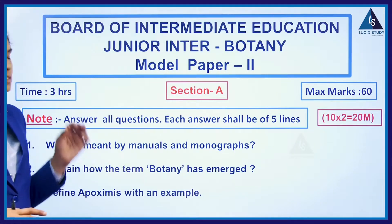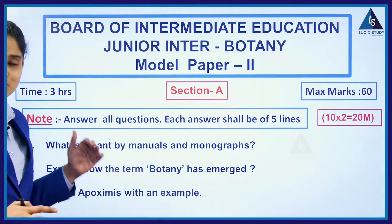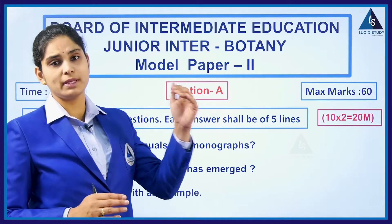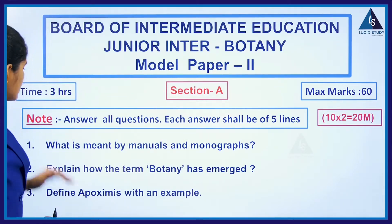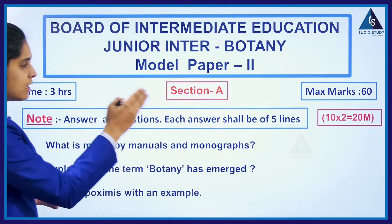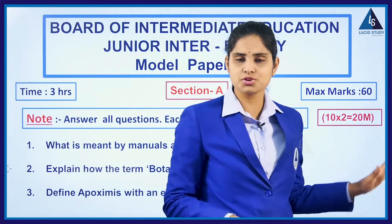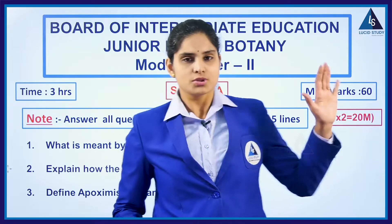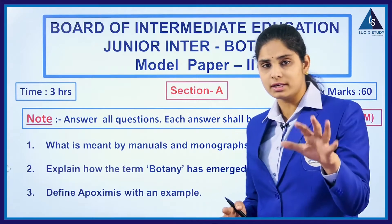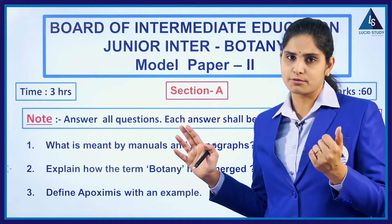The duration of the whole exam is three hours and the total maximum marks are 60. Section B and section C contain basic questions with a choice, whereas section A has no choice at all — you must answer all questions. Each question should be answered in five lines, there are 10 questions each carrying two marks, so the whole section A consists of 20 marks. You need to answer within the limit prescribed for each question.